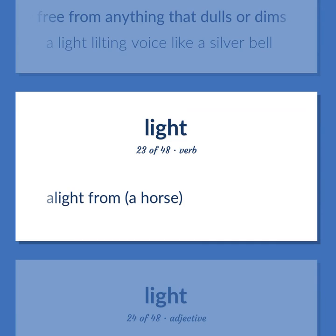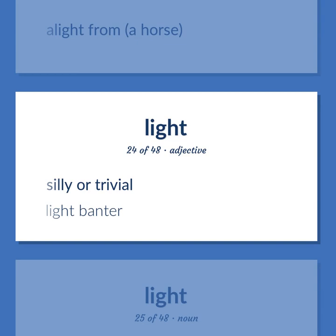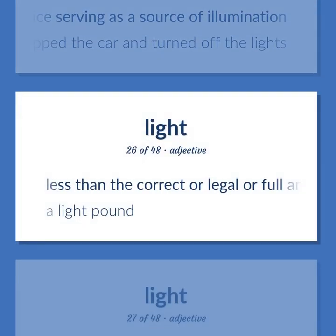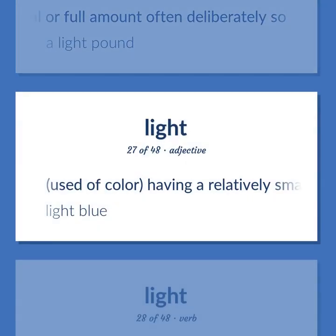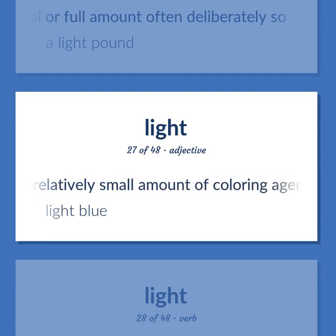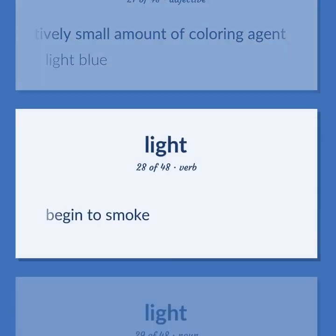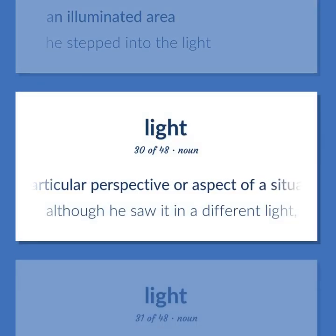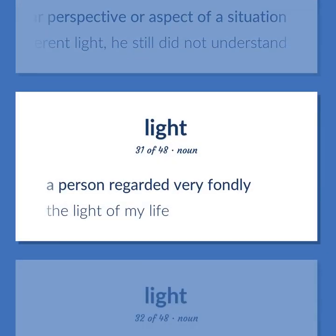The light from a horse. Silly or trivial — light banter. Any device serving as a source of illumination — he stopped the car and turned off the lights. Less than the correct or legal or full amount, often deliberately so — a light pound. Used of color: having a relatively small amount of coloring agent — light blue. Begin to smoke. An illuminated area — he stepped into the light. A particular perspective or aspect of a situation — although he saw it in a different light, he still did not understand. A person regarded very fondly — the light of my life.